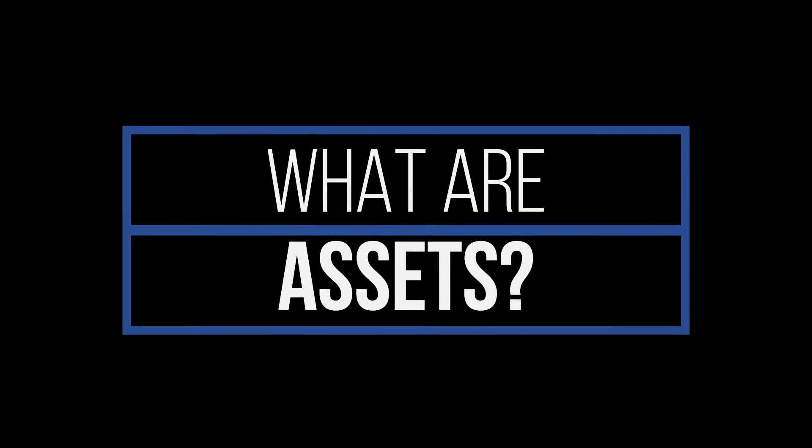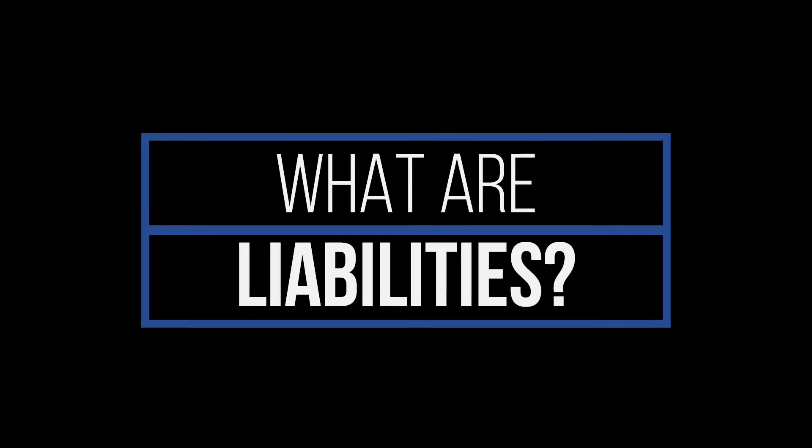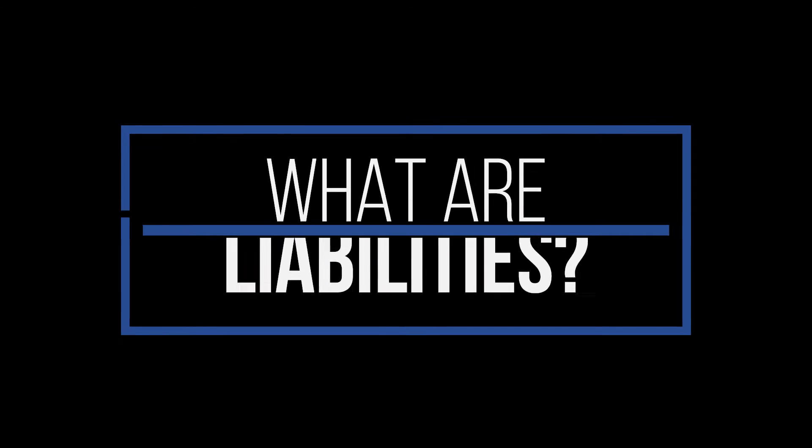Assets are anything you own that have value and are an addition to your balance sheet. Liabilities are anything you owe money on or that you could owe money on in the future — for example, your mortgage, a car loan, or a bill that is going to come due soon.